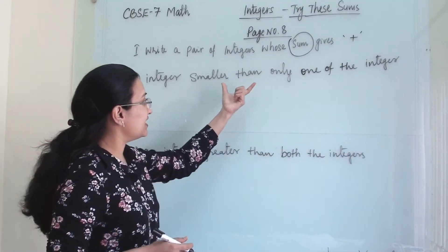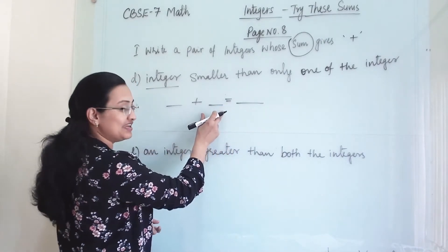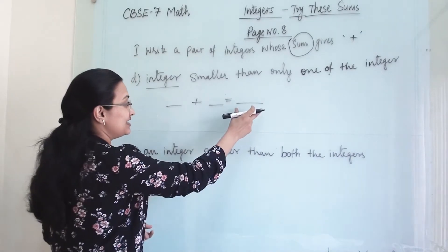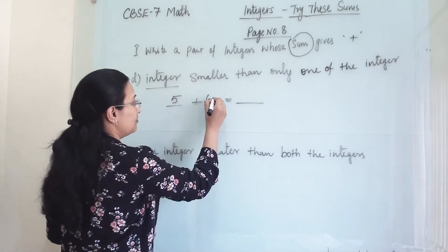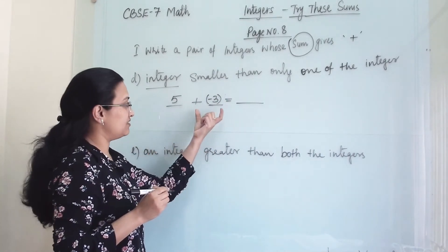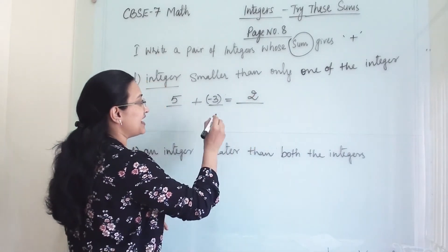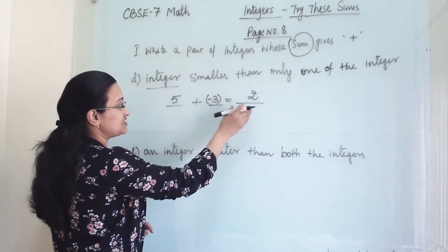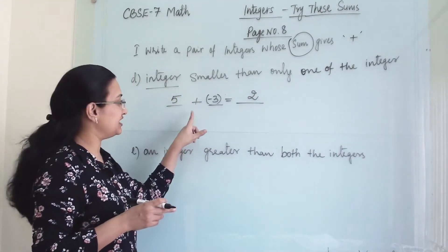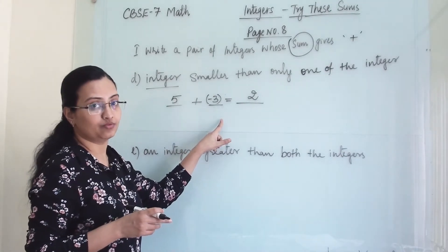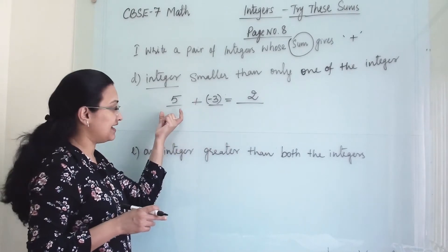Next, we need a pair whose sum gives an integer smaller than only one of the integers. The answer should be smaller than one integer but bigger than the other. We can arrange the numbers like 5 plus minus 3. One integer is positive and one is negative, giving us a subtraction operation. We get 2, which is smaller than 5 but bigger than minus 3. This is possible when one integer is positive and one is negative.